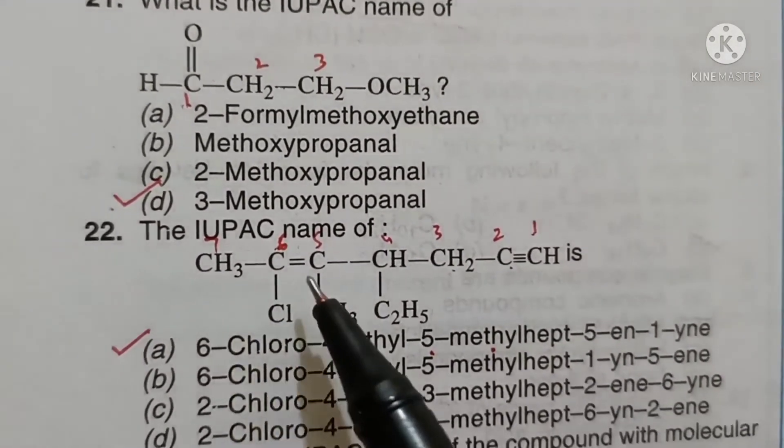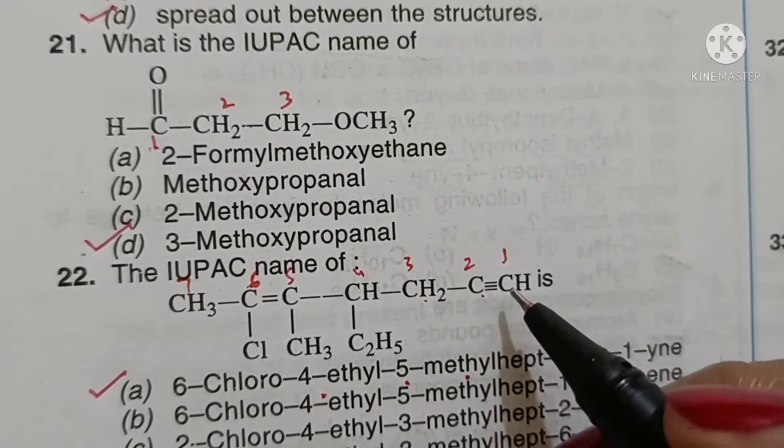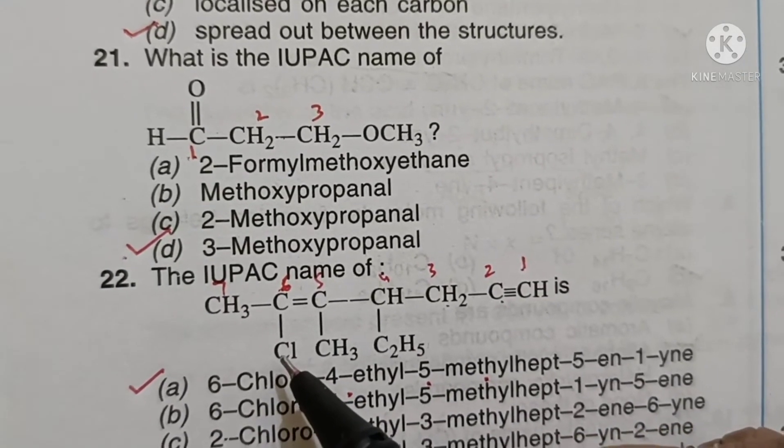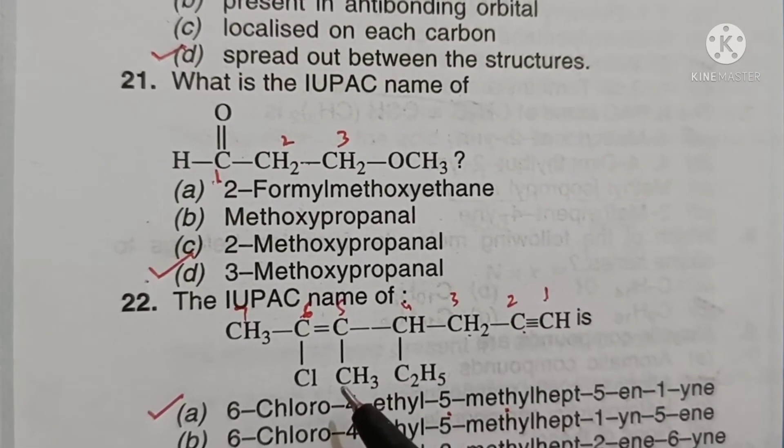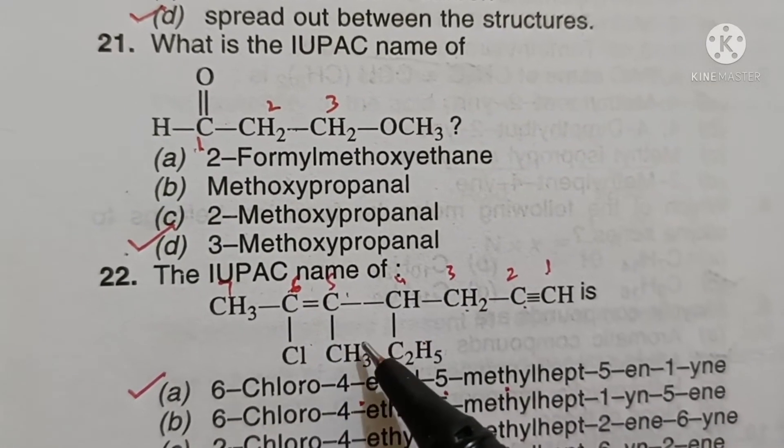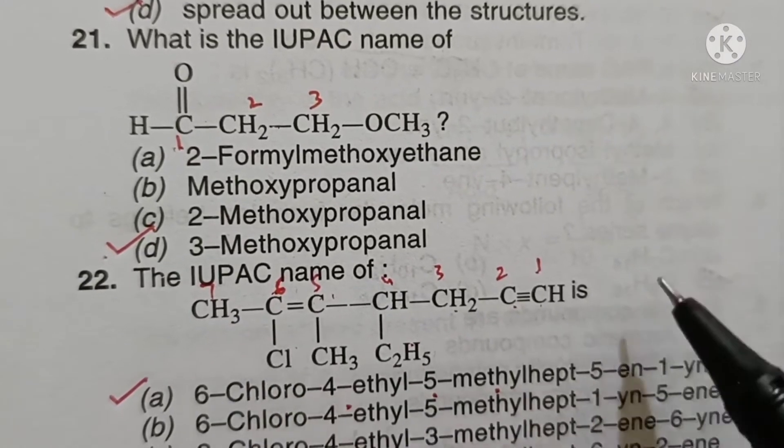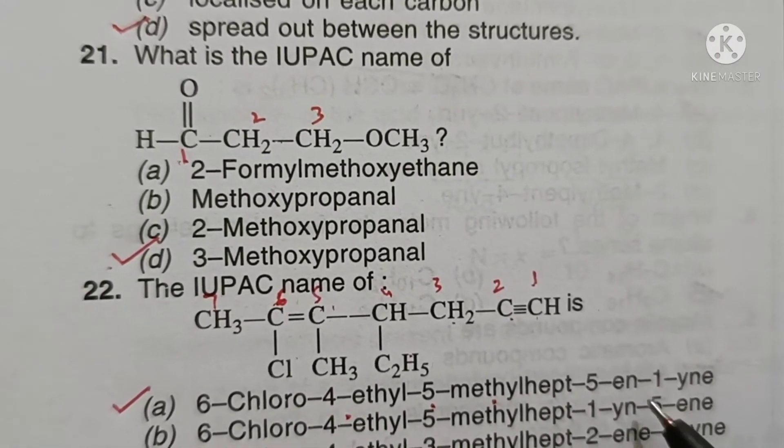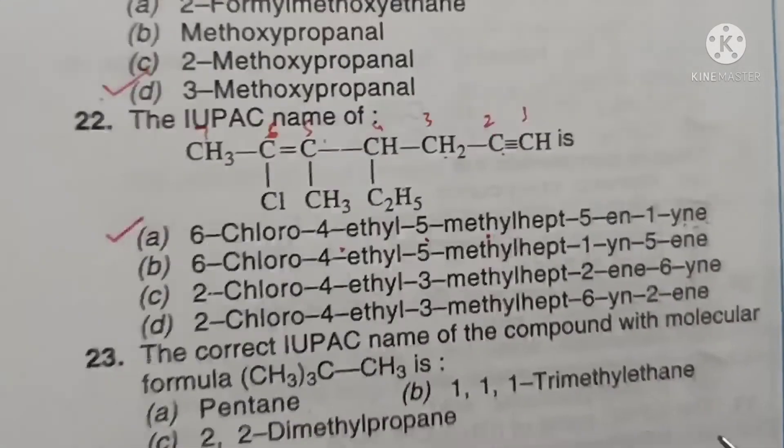The IUPAC name of this compound - it contains double bond as well as triple bond. While numbering we give preference to triple bond, so 1, 2, 3, 4, 5, 6, 7. We have ethyl, methyl and chloro as substituent. As C comes first, then E, then methyl, so it will be 6-chloro-4-ethyl-5-methyl-hept-5-en-1-yne. We give preference to triple bond as suffix and double bond is placed first. Option A is the correct answer.